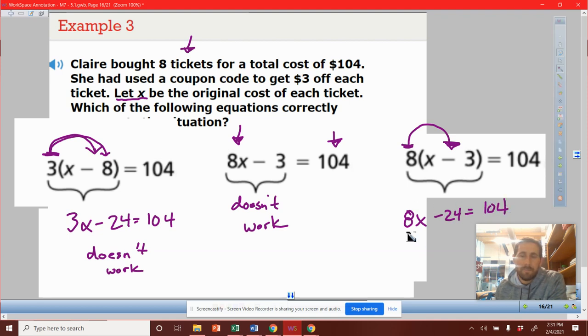So what this is saying is I'm going to buy eight tickets at the price of x, but then I'm going to get $24 off. And the reason I get $24 off is I get $3 off for every ticket I buy. So that's $3 off of the eight tickets I've bought. That's $24 that I get as a discount. This one is correct.